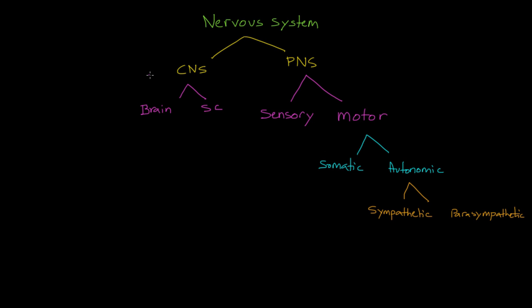Let's talk a little bit more about some of these levels. Let's talk about this one right here. We said that within the peripheral nervous system, we have sensory neurons and motor neurons.